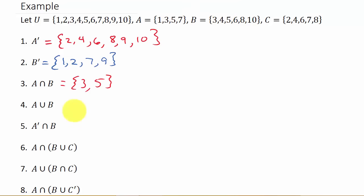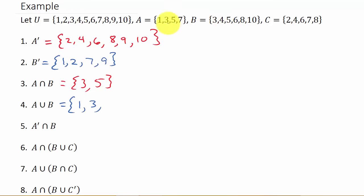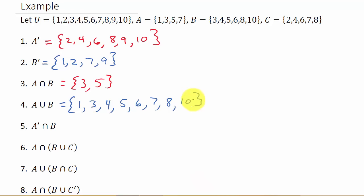And then A union B — that's all the elements from sets A and B combined into one set. So we've got one, three — and B has a three too, but we only write it once. Then four, five, six, seven, eight, and ten. And so there's A union B = {1, 3, 4, 5, 6, 7, 8, 10}.